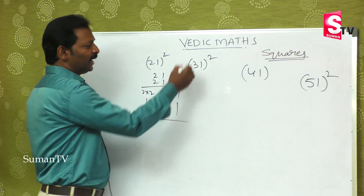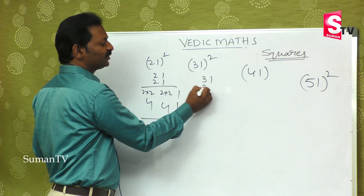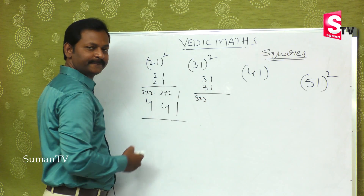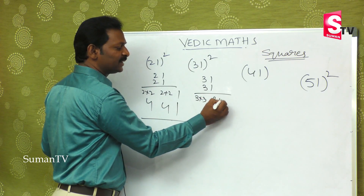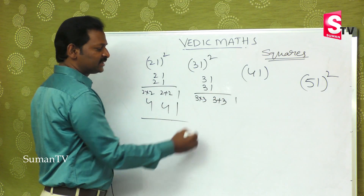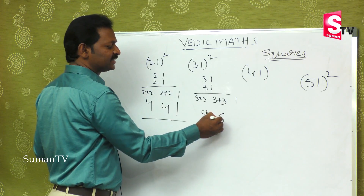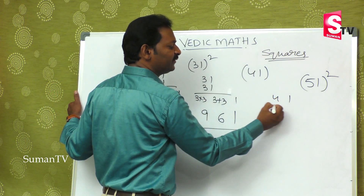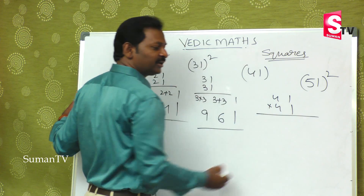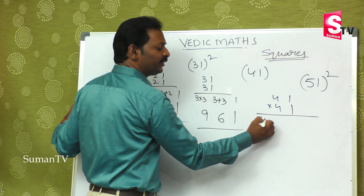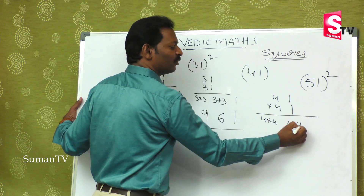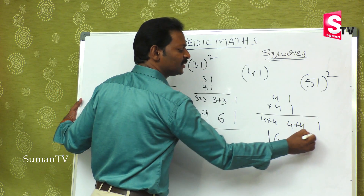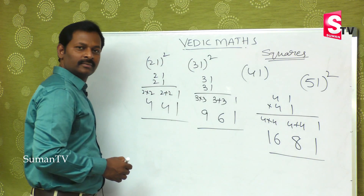For 31 into 31: first 3 into 3 is 9, then 3 plus 3 is 6, then 1 — so the answer is 961. For 41 into 41: first 4 into 4 is 16, then 4 plus 4 is 8, then 1 — giving 16, 8, 1. The answer is 1681.